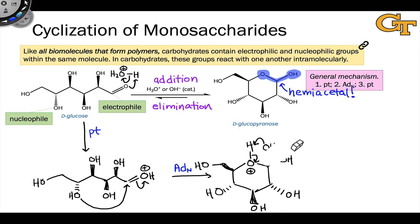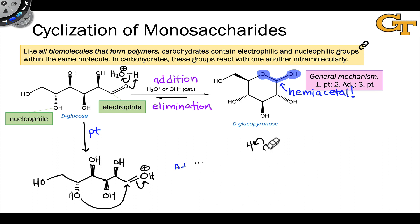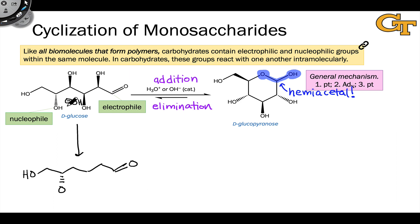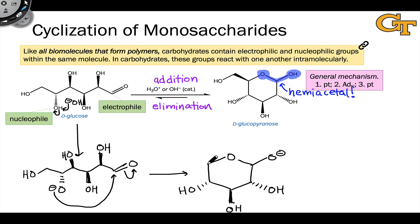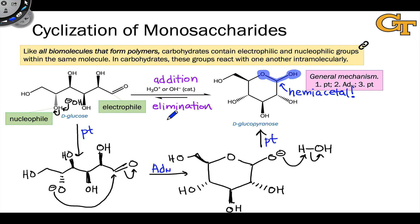The base catalyzed mechanism involves the same classes of elementary steps but the proton transfers happen in reverse order. First, the 5-hydroxyl group is deprotonated to form an alkoxide. This alkoxide adds to the carbonyl carbon forming the conjugate base of the hemiacetal, and the resulting negatively charged oxygen is protonated to form the hemiacetal product and regenerate the hydroxide catalyst. And here again, all we're doing is a base catalyzed nucleophilic addition process. Because it's intramolecular, this is a very rapid process.